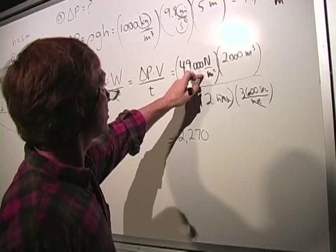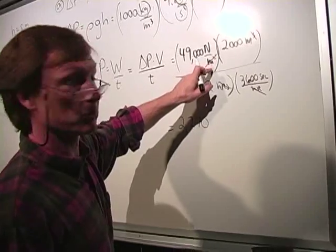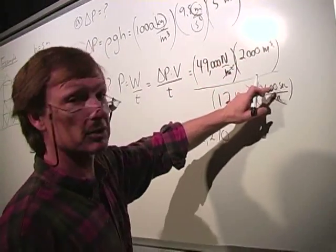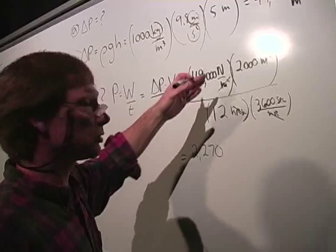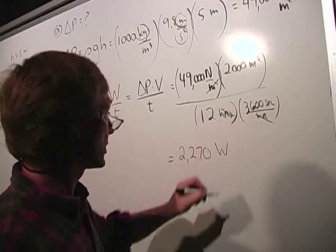2,270. Now, newtons per meter squared times meters cubed. I'm going to have one meter left up here. Meters cubed over meters squared. So I got newtons times meters divided by seconds. Well, that's a newton meter is a joule. So that's joules per second. And the joule per second is a watt.